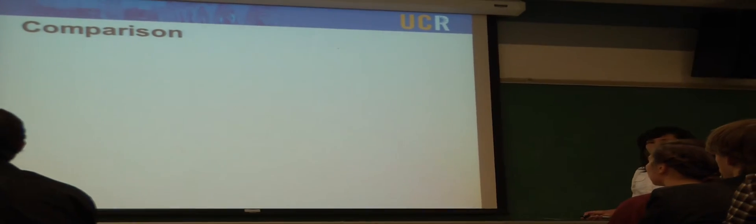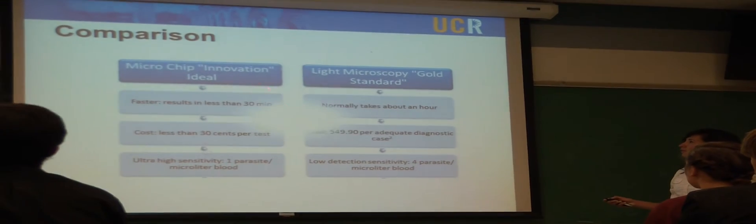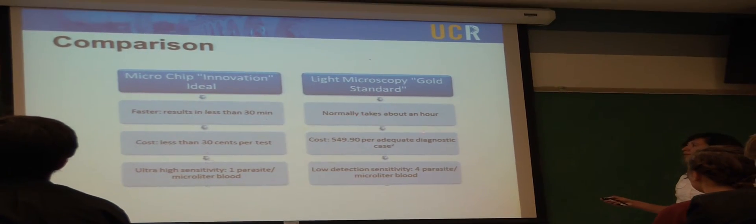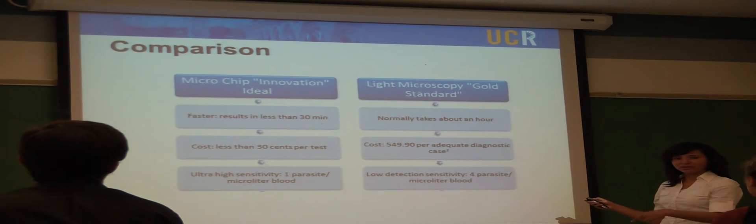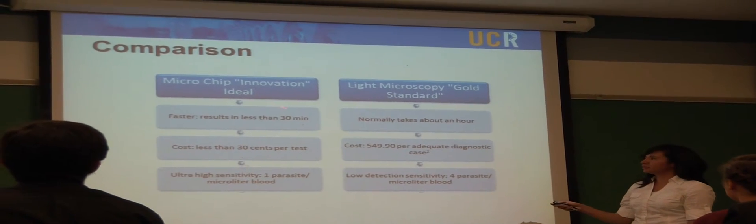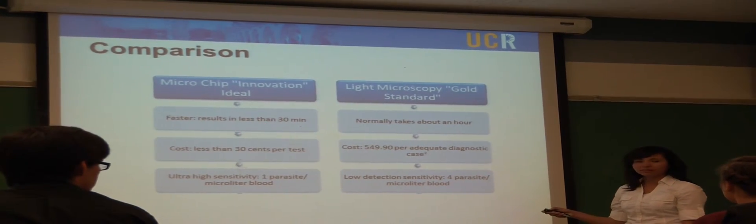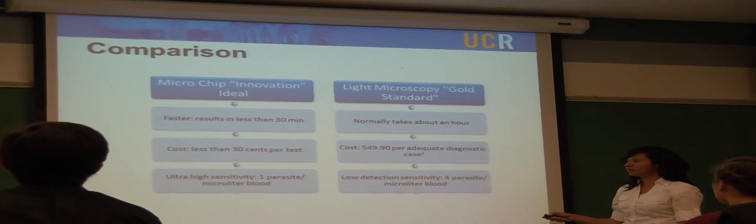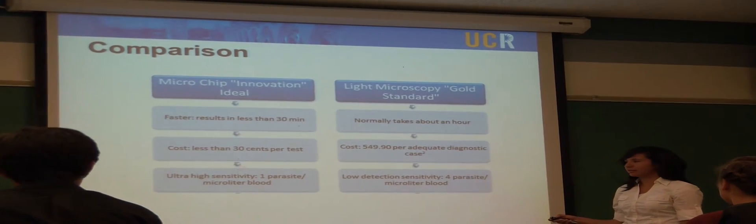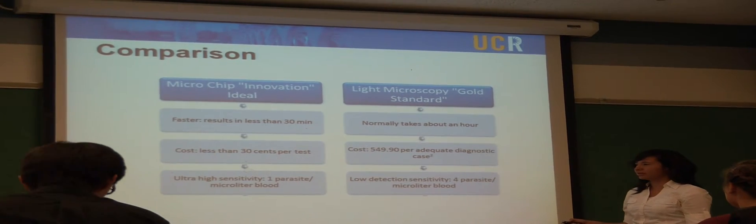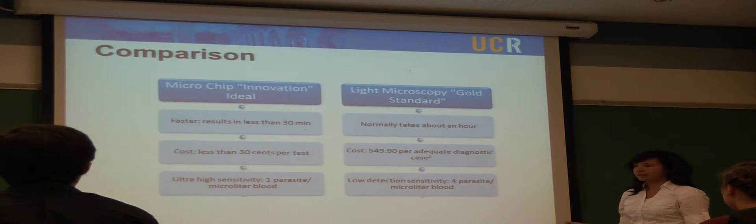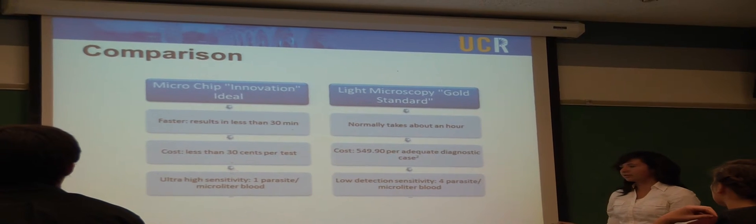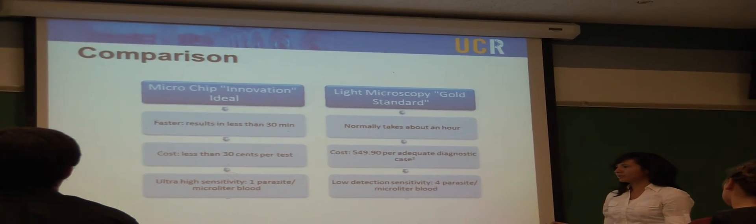Now we're going to compare the chip to the gold standard. The chip is way faster than the gold standard. The gold standard usually takes about an hour after it is transported to the lab. The chips are designed to take less than three minutes to show results for the whole process. The cost factor is important because malaria is most common in developing countries, where they don't have the resources to diagnose and treat the individual. By decreasing the cost, we're also increasing the availability to the individuals.